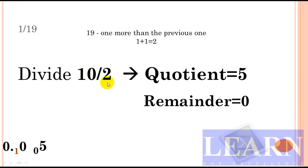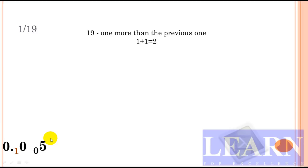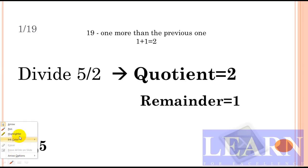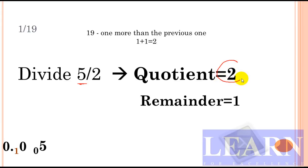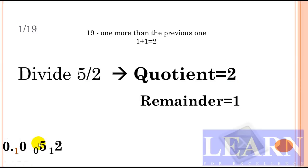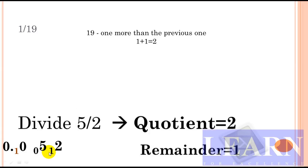The next number formed from remainder 0 and quotient 5 is 05, so we divide 5 by 2. This gives quotient 2 and remainder 1, so we write 1 small and 2 large. Then the next number is 12, so we divide 12 by 2, getting quotient 6 and remainder 0.